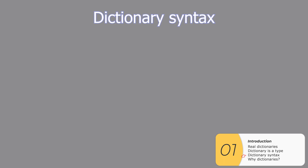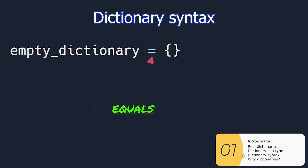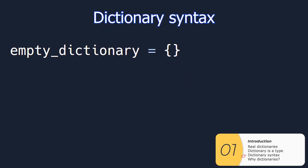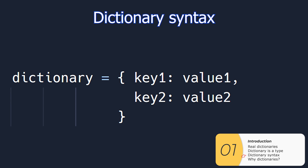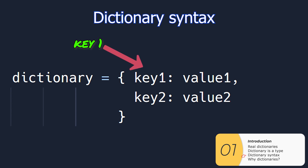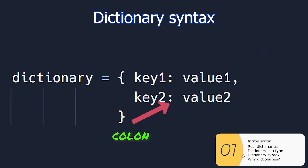Here's how we do dictionary syntax. To make an empty dictionary, you do dictionary equals squiggly brackets — that's different from lists, which use square brackets. For dictionaries that are already populated, it's dictionary equals squiggly brackets, then key one colon value one. If you want more than one key-value pair, separate it with a comma, then key two colon value two.